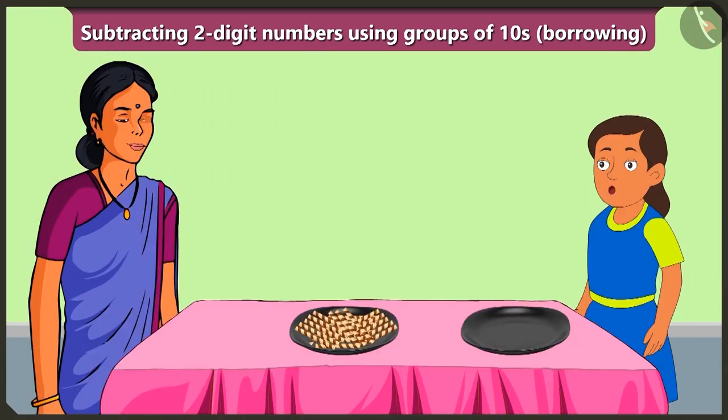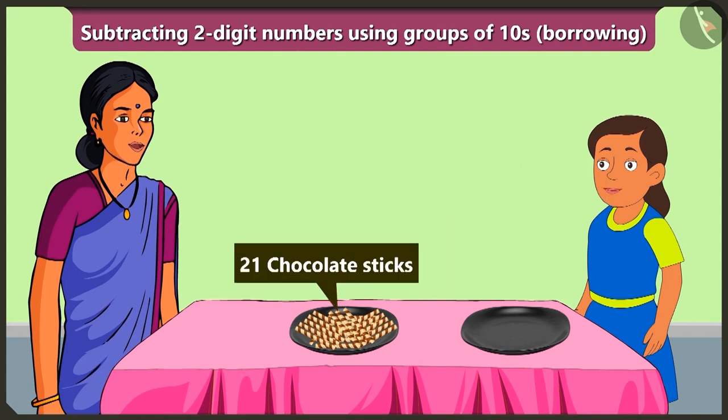Oh wow, chocolate sticks! I will take twelve sticks. Bubbly, there are a total of twenty-one chocolate sticks. If you will take twelve sticks from a total of twenty-one sticks, then how many sticks would Bunty get?